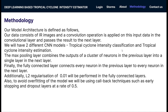The max pooling layer combines the outputs of a cluster of neurons in the previous layer into a single neuron in the next layer. The fully connected layer connects every neuron in the previous layer to every neuron in the next layer. The model predicts the intensity and other features such as the regions getting affected.